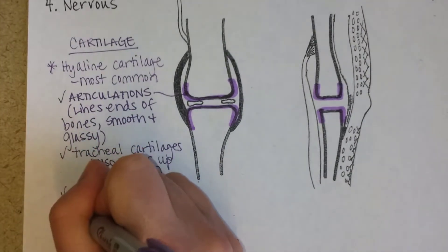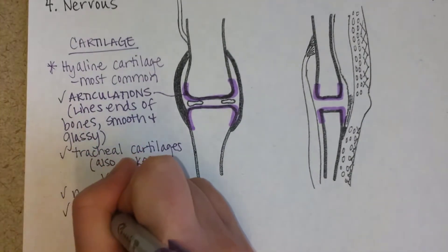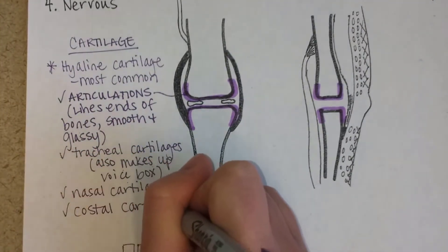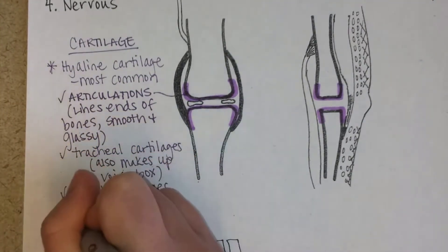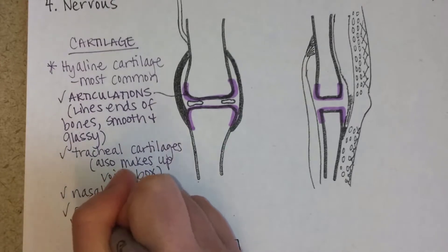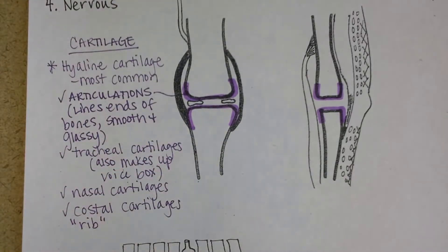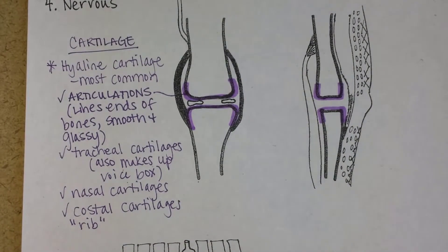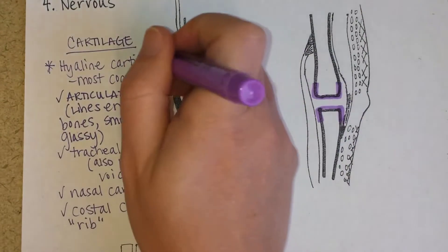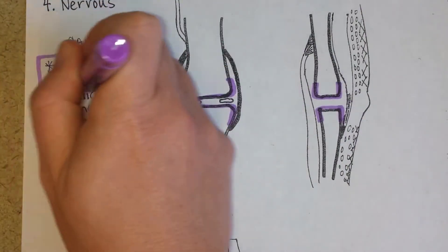Another example is costal — the word means rib — and those are cartilages that connect your ribs to your sternum. So hyaline cartilage is the most common, but it's not the only kind.